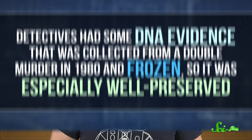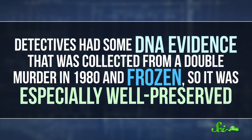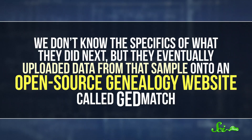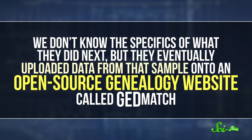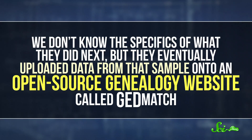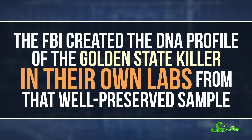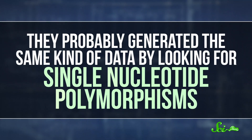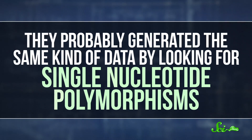But with the Golden State Killer, the cold case heated up because of a different approach to DNA — one that's a lot closer to spitting in a tube to find out your ancestry. Detectives had some DNA evidence collected from a double murder in 1980 and frozen, so it was especially well-preserved. We don't know the specifics of what they did next, but they eventually uploaded data from that sample onto an open-source genealogy website called GEDmatch. While GEDmatch isn't a power player in the commercial DNA industry like 23andMe or Ancestry.com, it runs on the same kind of information. The FBI created the DNA profile of the Golden State Killer in their own labs, from that well-preserved sample, and they probably generated the same kind of data by looking for single-nucleotide polymorphisms, or SNPs.